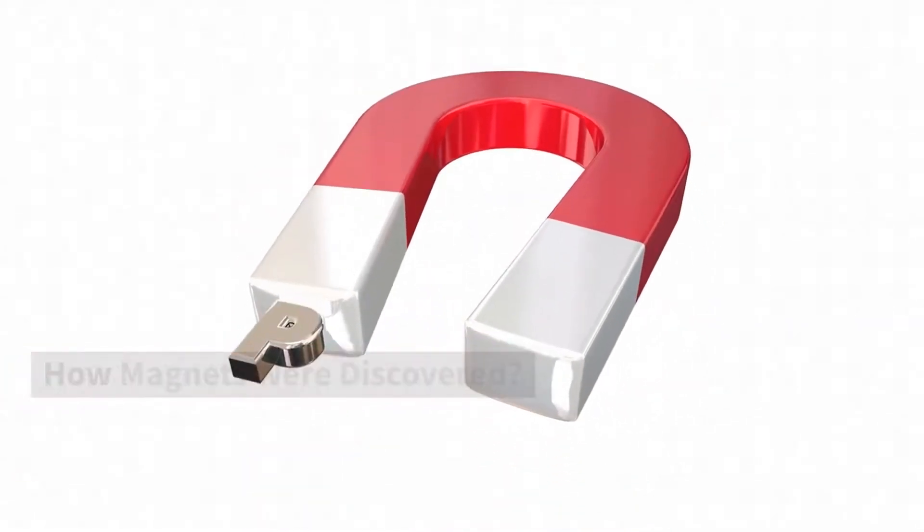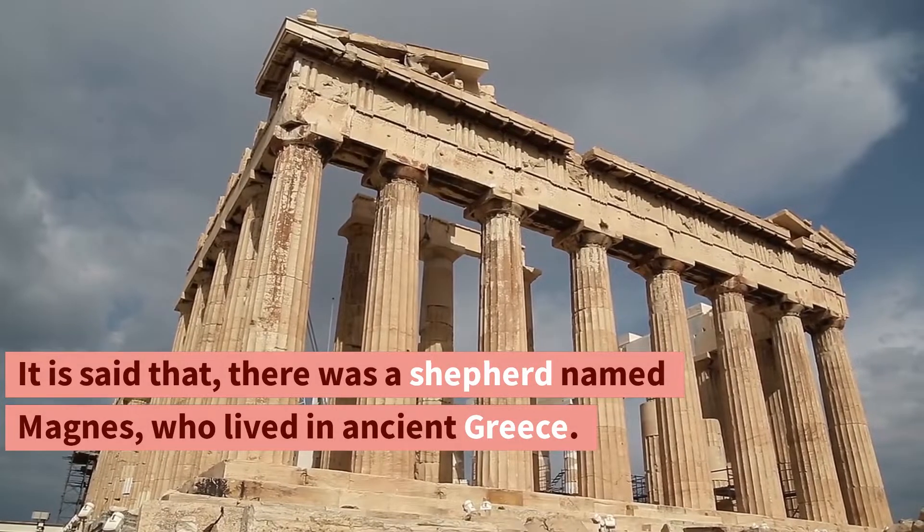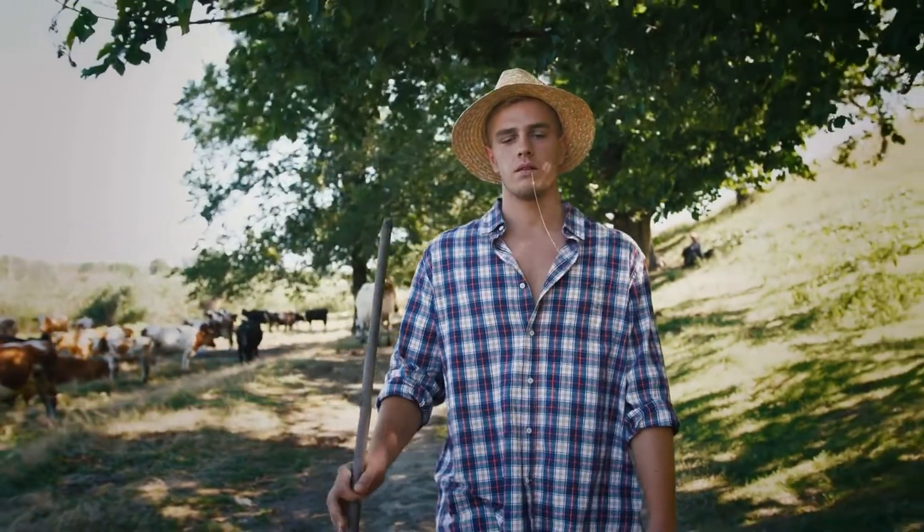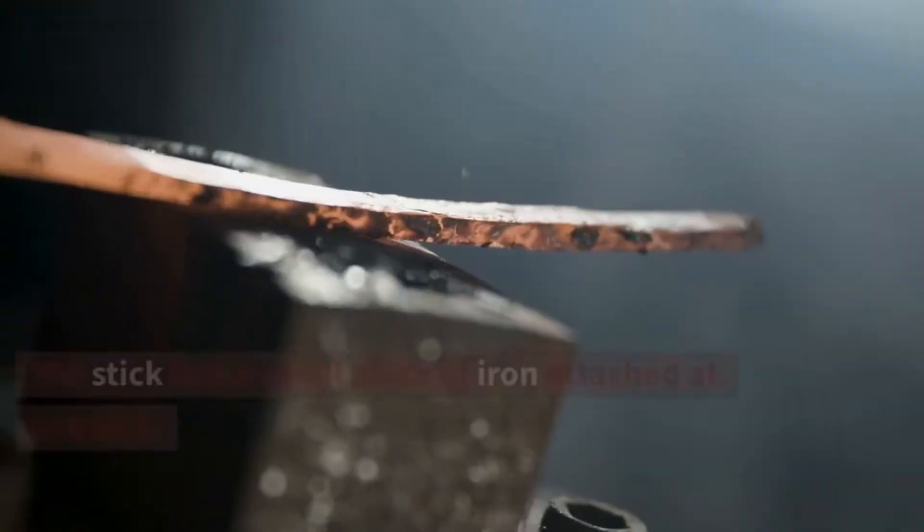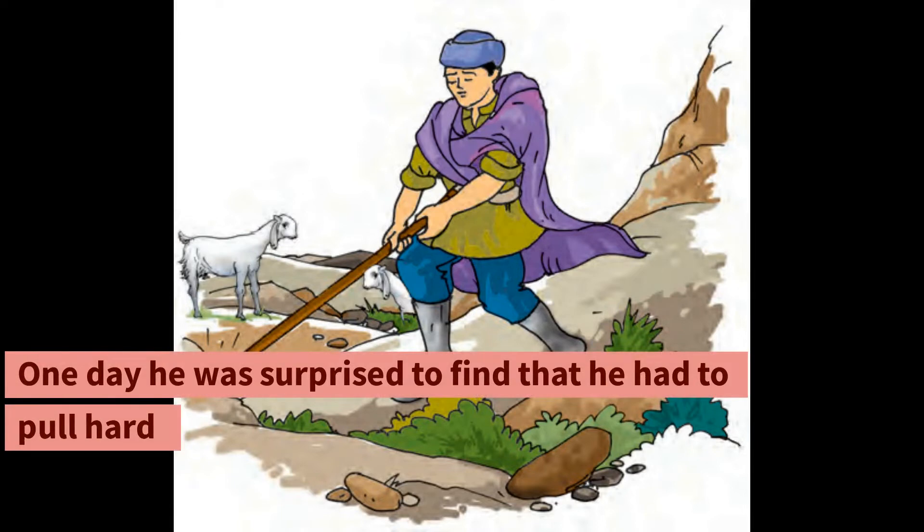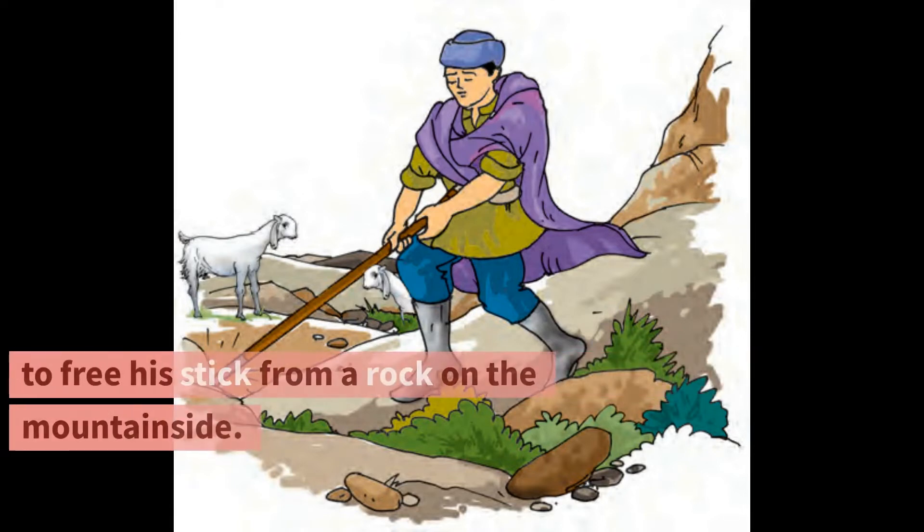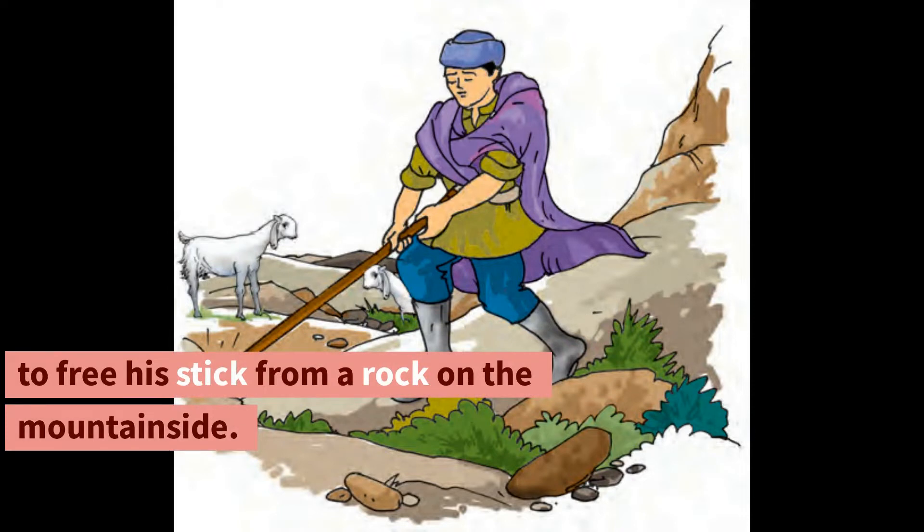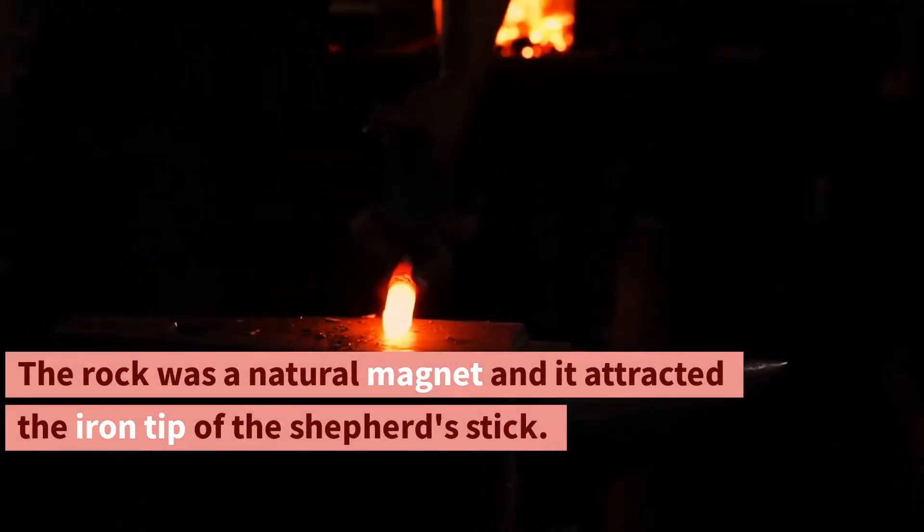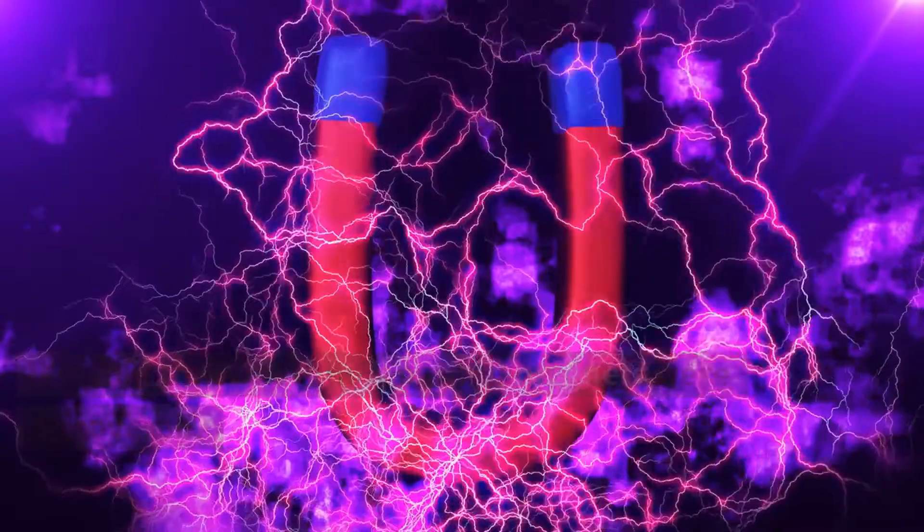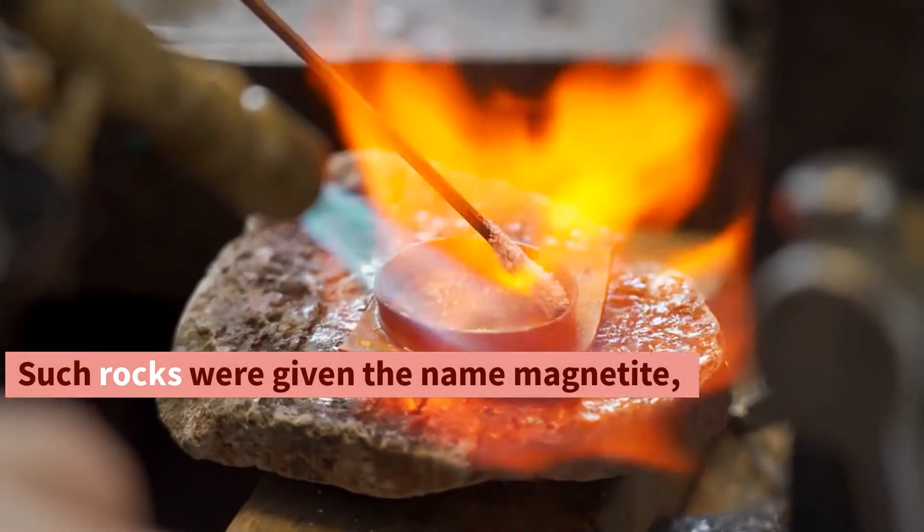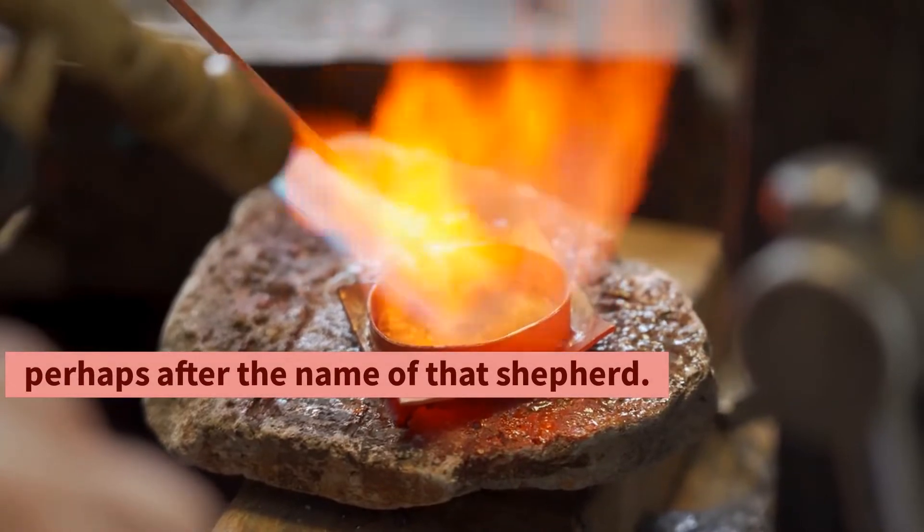How magnets were discovered? It is said that there was a shepherd named Magnus who lived in ancient Greece. He used to take his herd of sheep and goats to the nearby mountains for grazing. He would take a stick with him to control his herd. The stick had a small piece of iron attached at one end. One day he was surprised to find that he had to pull hard to free his stick from a rock on the mountainside. It seemed as if the stick was being attracted by the rock. The rock was a natural magnet and it attracted the iron tip of the shepherd's stick. It is said that this is how natural magnets were discovered. Such rocks were given the name magnetite, perhaps after the name of that shepherd.